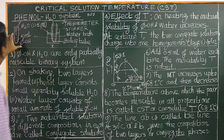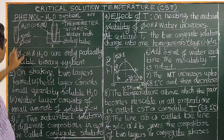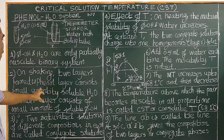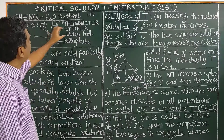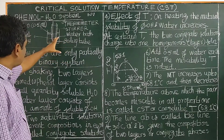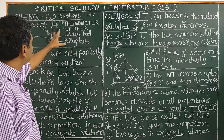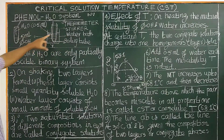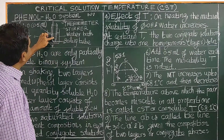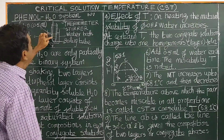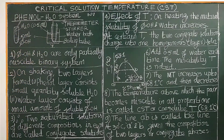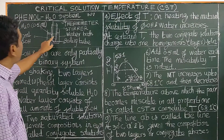On shaking phenol and water, two layers are formed — the phenol layer and the water layer. The phenol layer is at the bottom because the density of phenol is 1.07. The water layer is at the top. The phenol layer consists of a little quantity of water dissolving in it, because water is sparingly soluble in phenol.